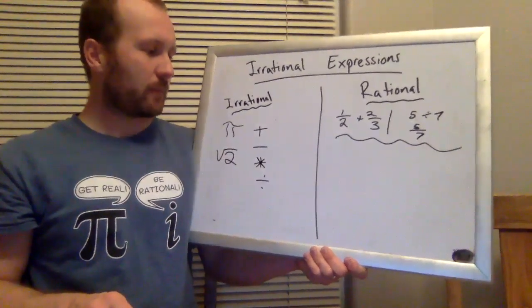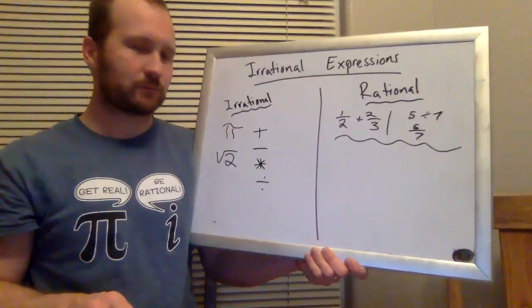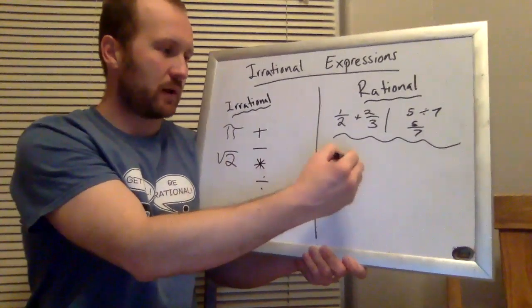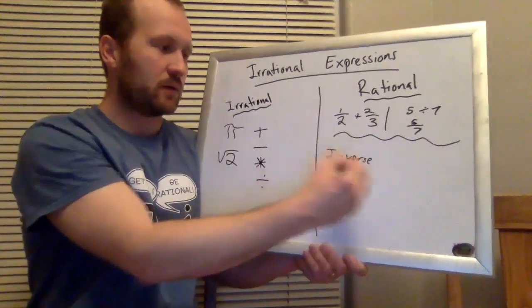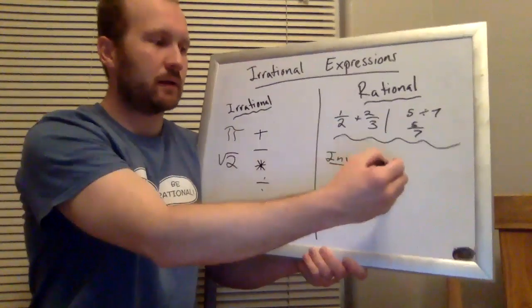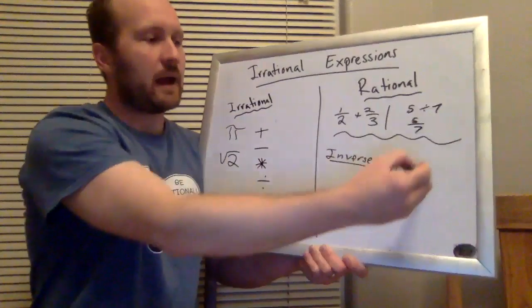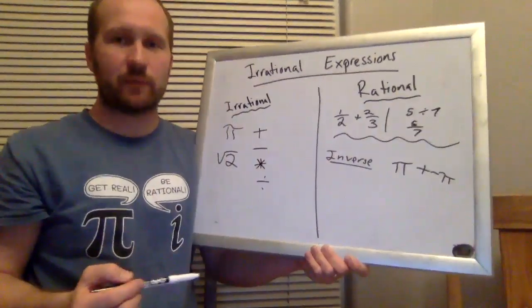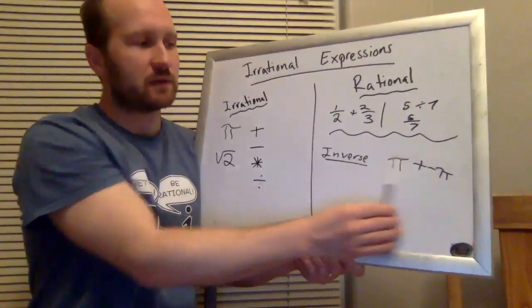So what are those cases? Well, one case is the inverses, right? So if I take pi and I add to it negative pi, I'm going to get zero. That's the inverse, that's the opposite of pi.